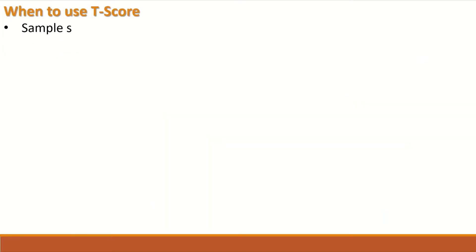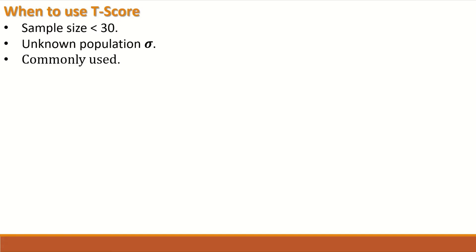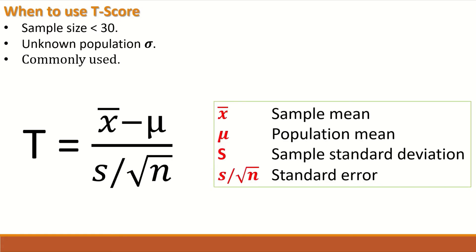So when do we use the t-score? We use the t-score when the sample size is less than 30 and when the population standard deviation is unknown. It is commonly used. The equation for t-score calculation is: t = (sample mean − population mean) / standard error, where standard error equals the standard deviation of the sample divided by the square root of n.